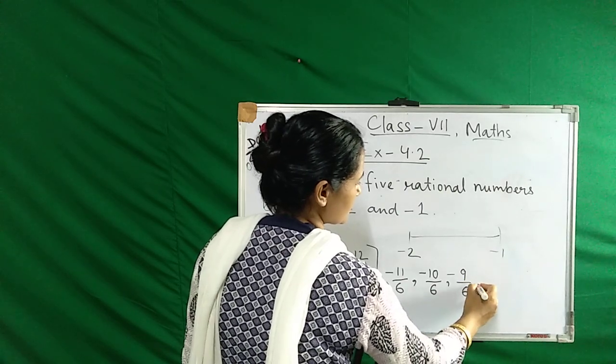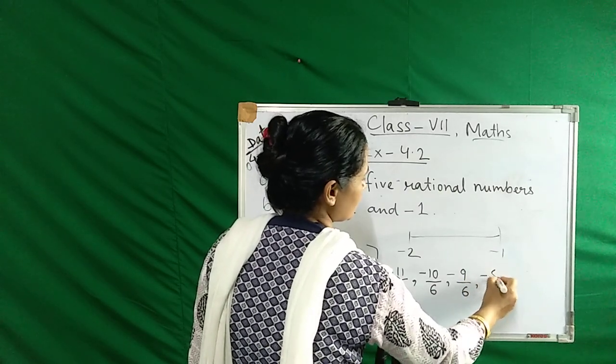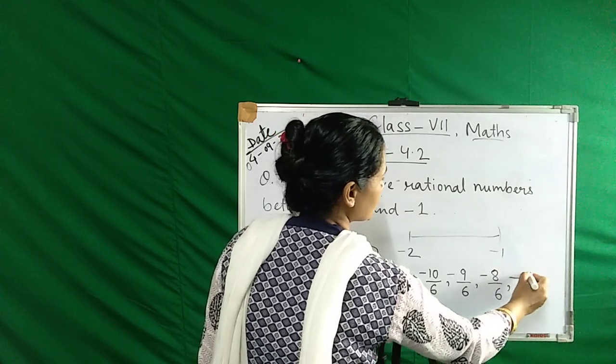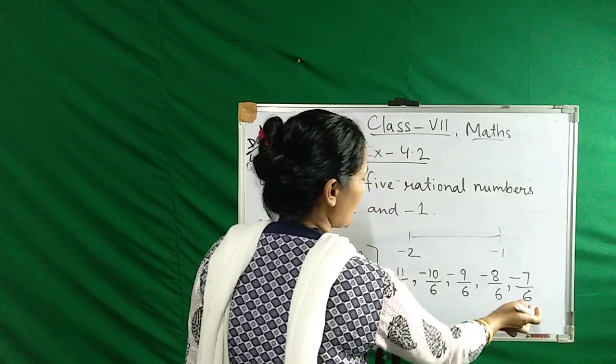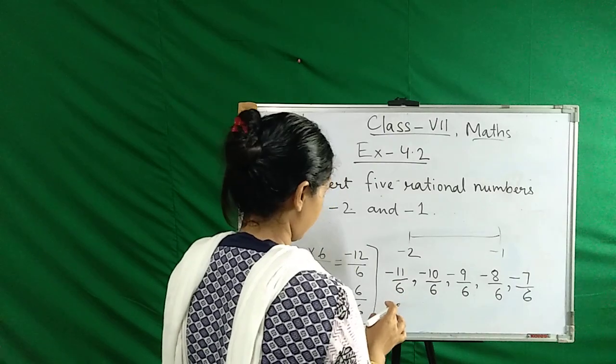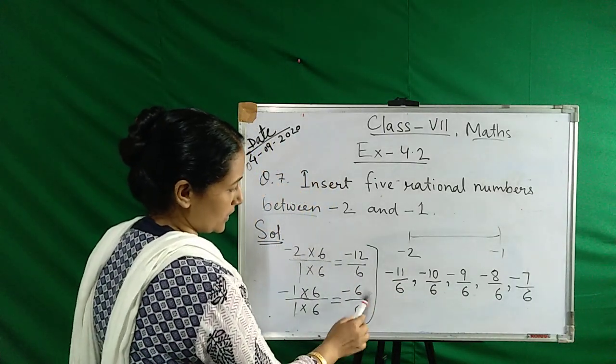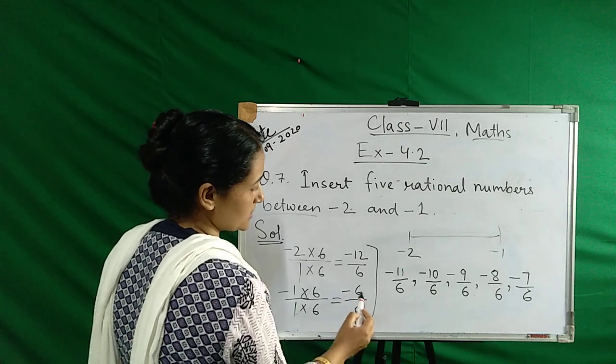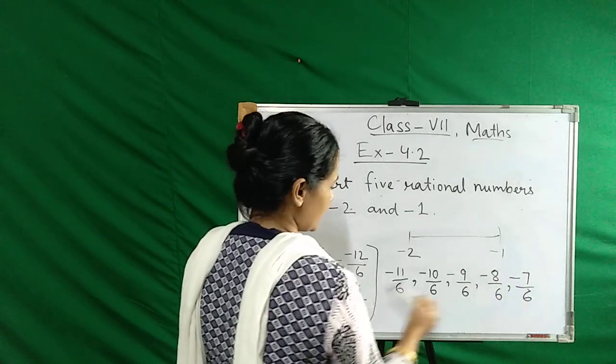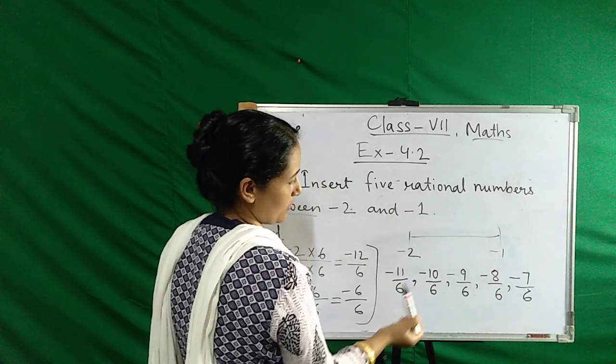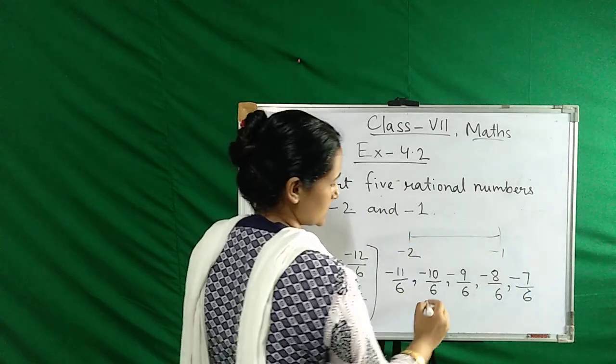Minus 11 by 6, minus 10 by 6, minus 9 by 6, minus 8 by 6, minus 7 by 6. One, two, three, four, five. So see, between these two numbers, the five rational numbers are here. So this is the answer.